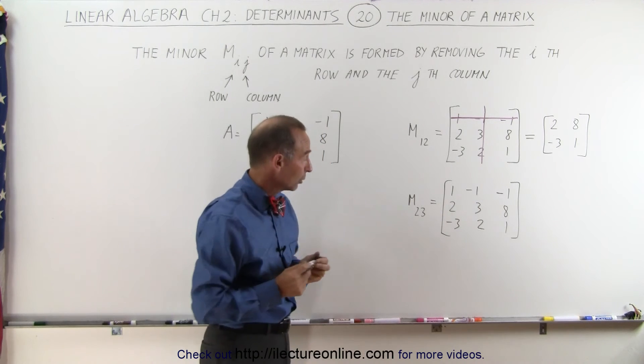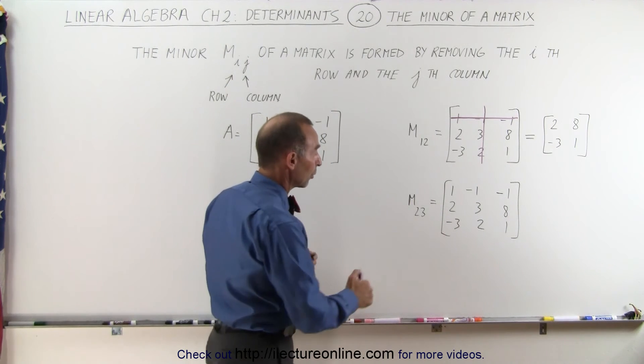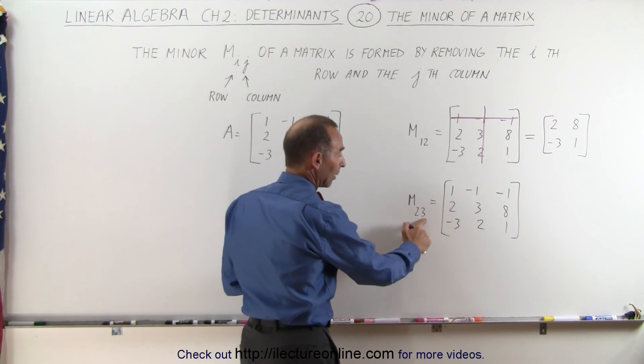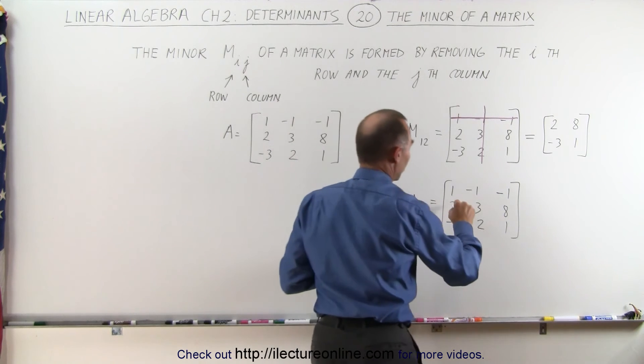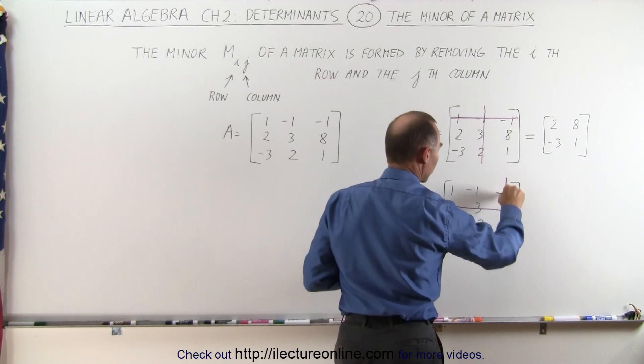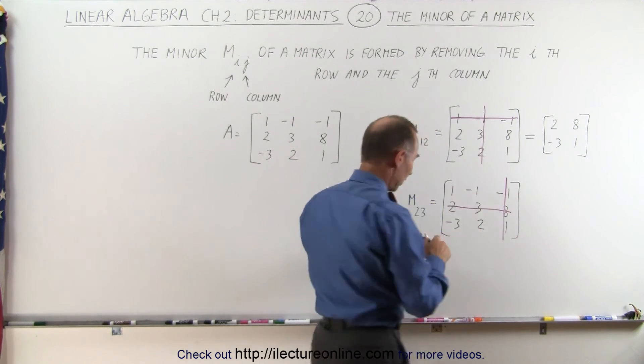Here we have to find the minor M_23 which means we're going to remove the second row and the third column. The second row is this row, the third column is this column, that leaves you with these four elements which make up the minor.